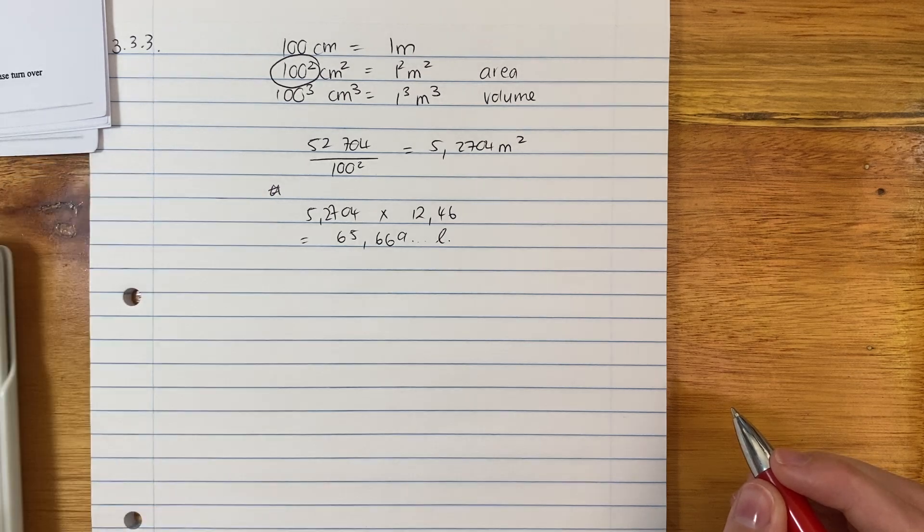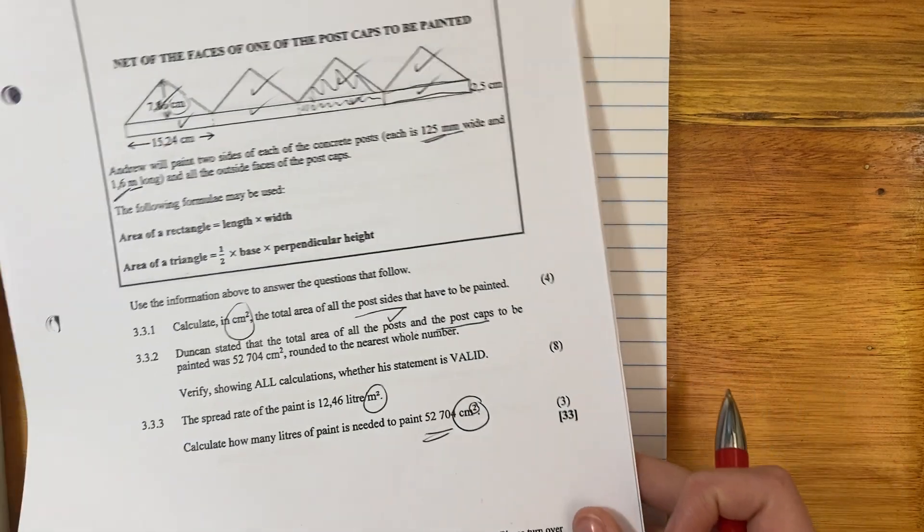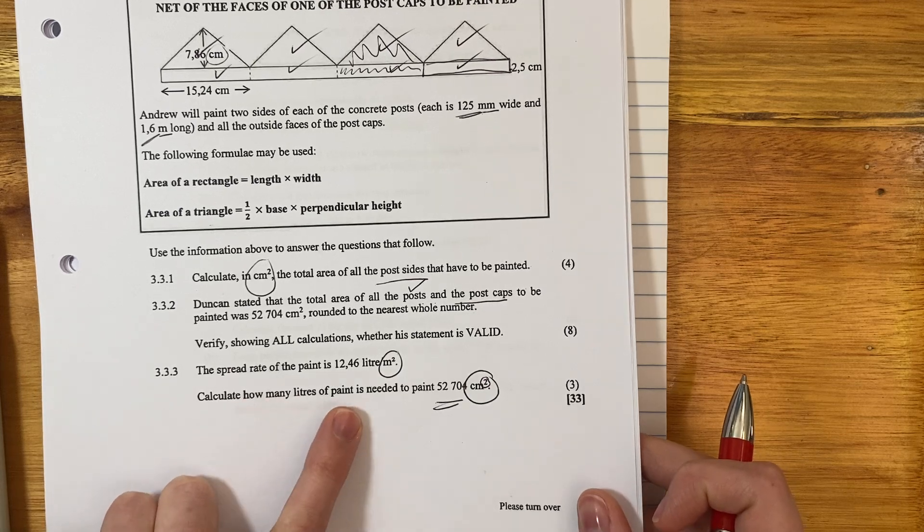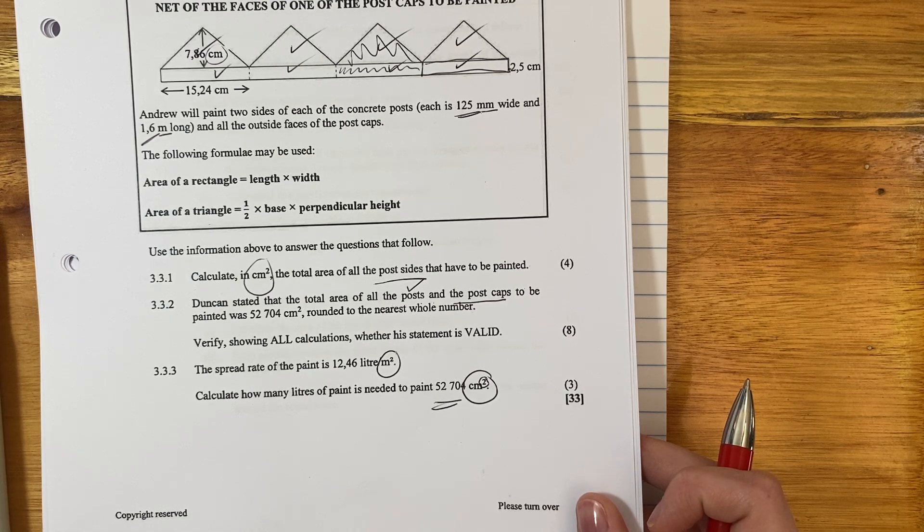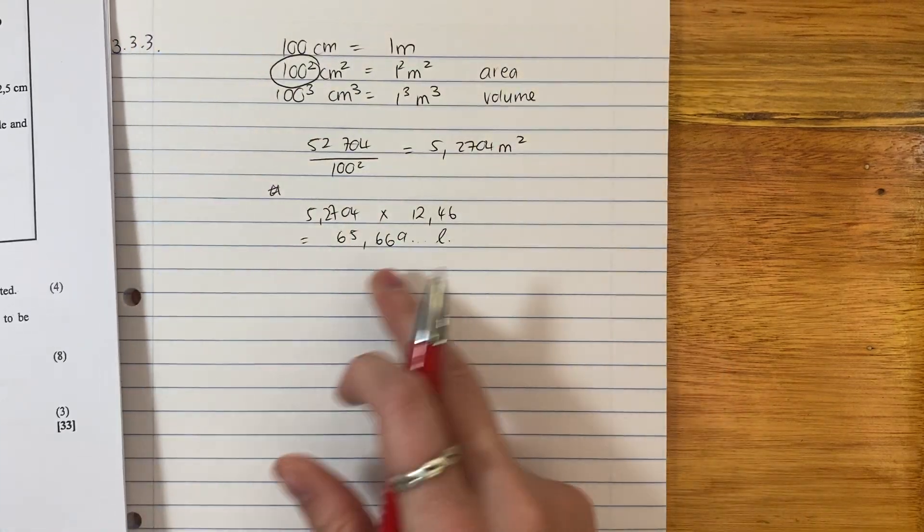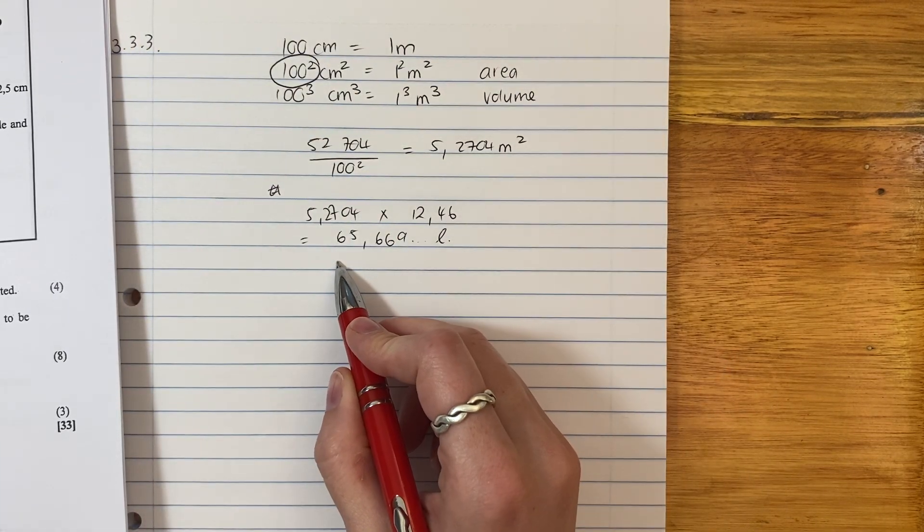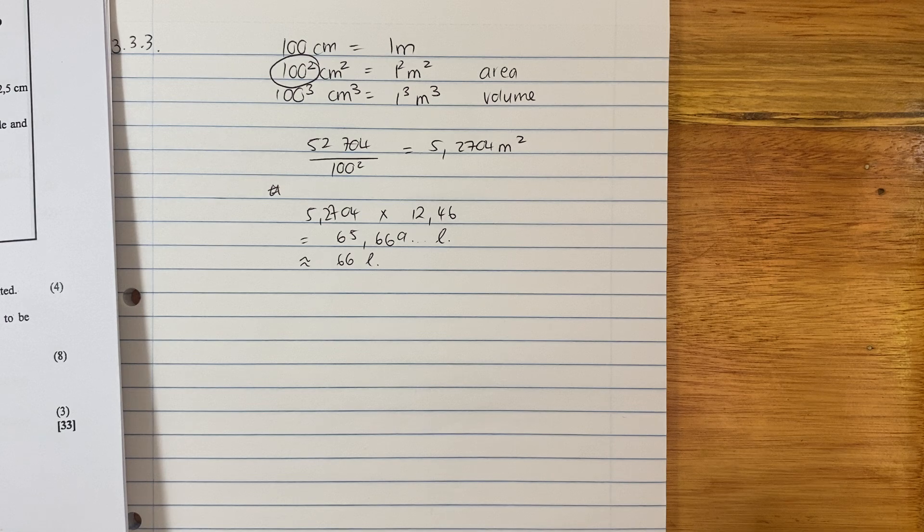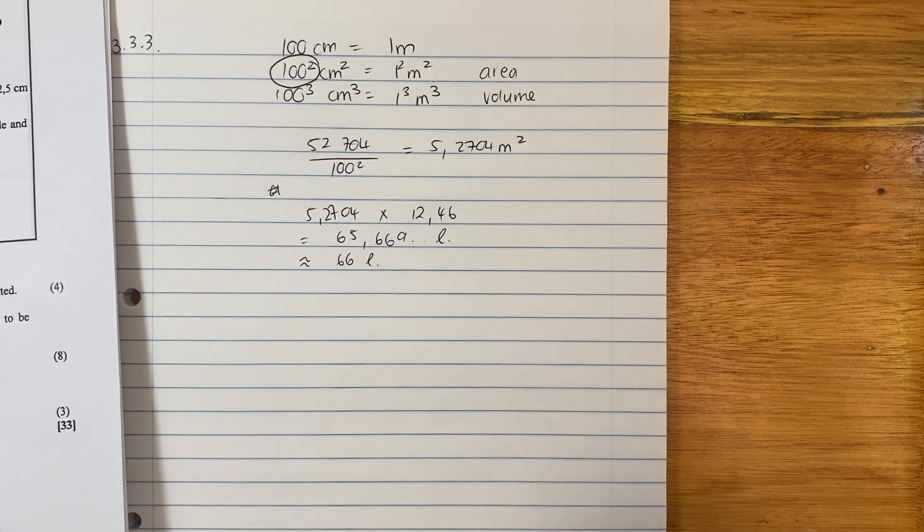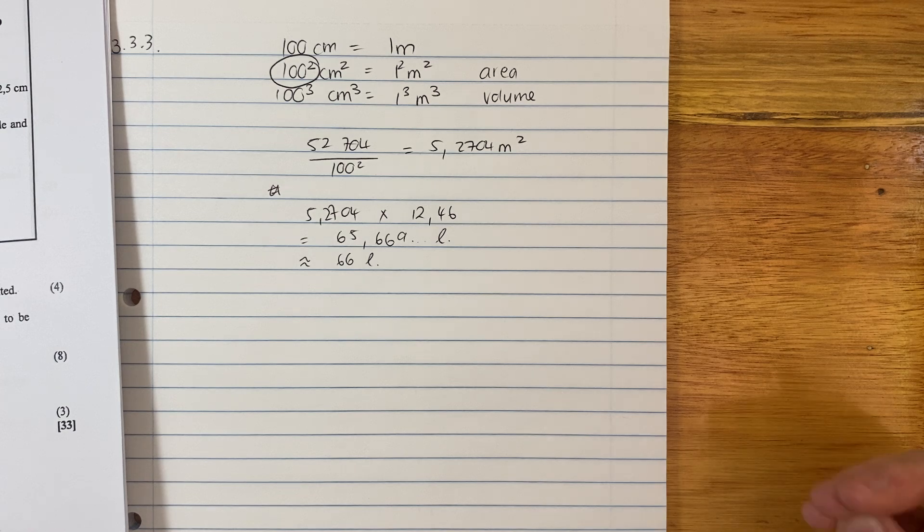Now we're not done because it said calculate how many liters of paint is needed. Now we, because it asked for liters, it wants you to actually round it off. So if we needed to paint all of this, we couldn't buy 65 liters. That wouldn't cover everything. We'd need to buy 66 liters and there's our answer. Because when you go to a paint shop, you can't say, can I have 65.669. Also makes sense to just have a little bit extra paint. This question for me was the most difficult question thus far in the paper, but let's move on to question four and see what we can do.